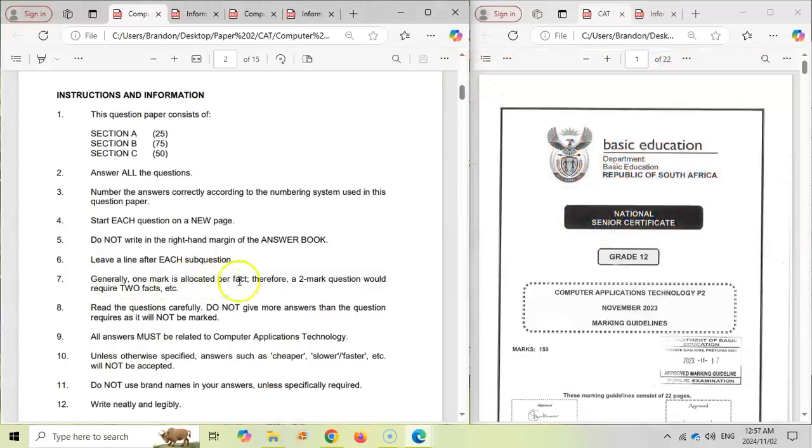Just take note one mark is allocated per fact so therefore a two mark question needs two facts. But they tend to only mark the first two. So if you give them three facts and they're only looking for two it doesn't matter that the first and the third fact is correct and the second one isn't. They only mark the first two. So make sure that you have your best answers first.